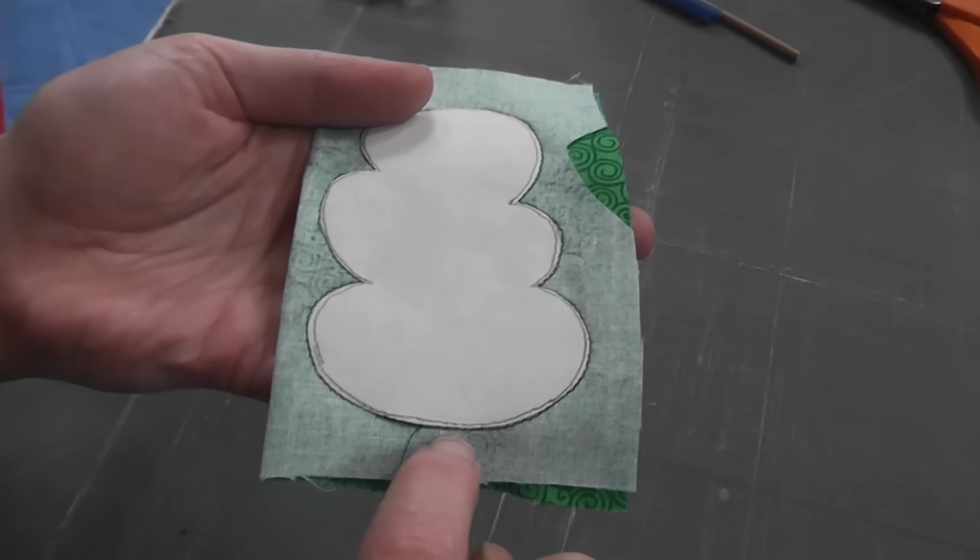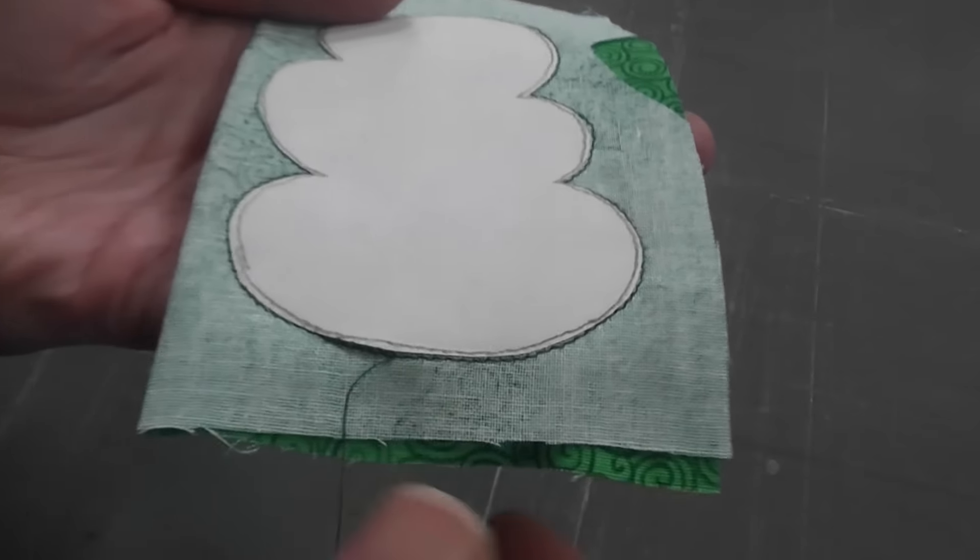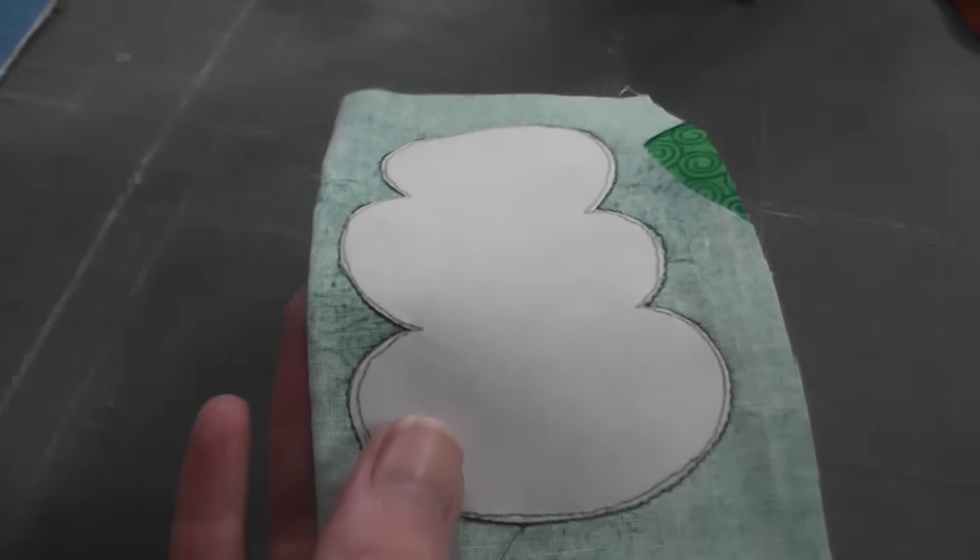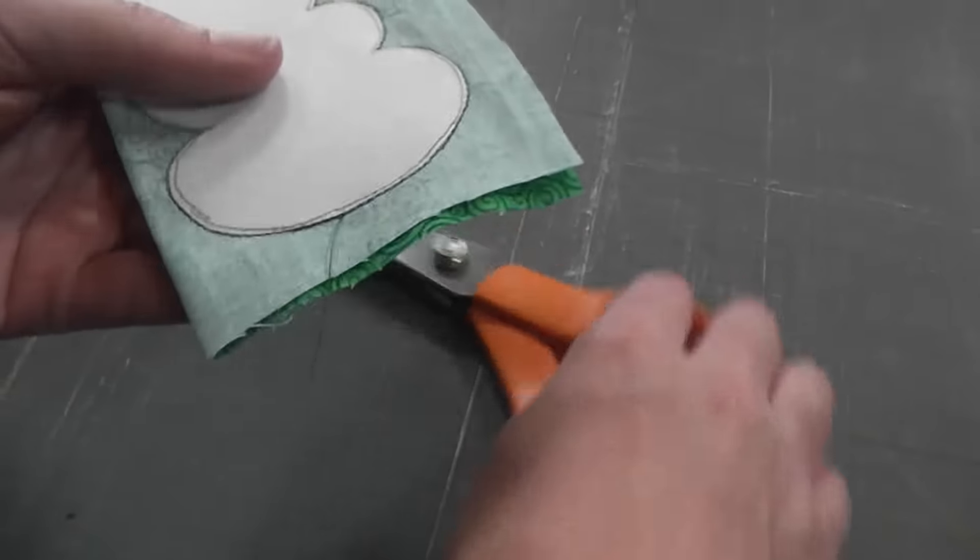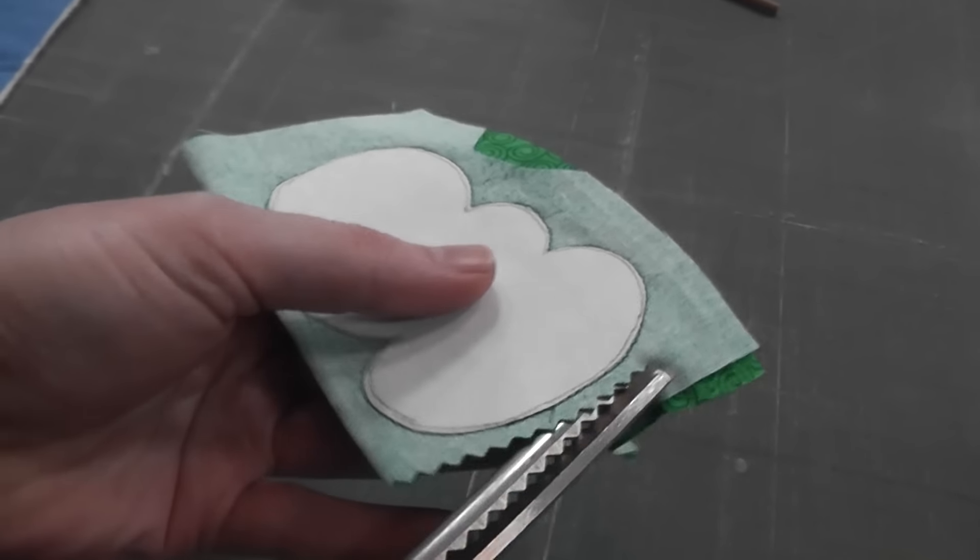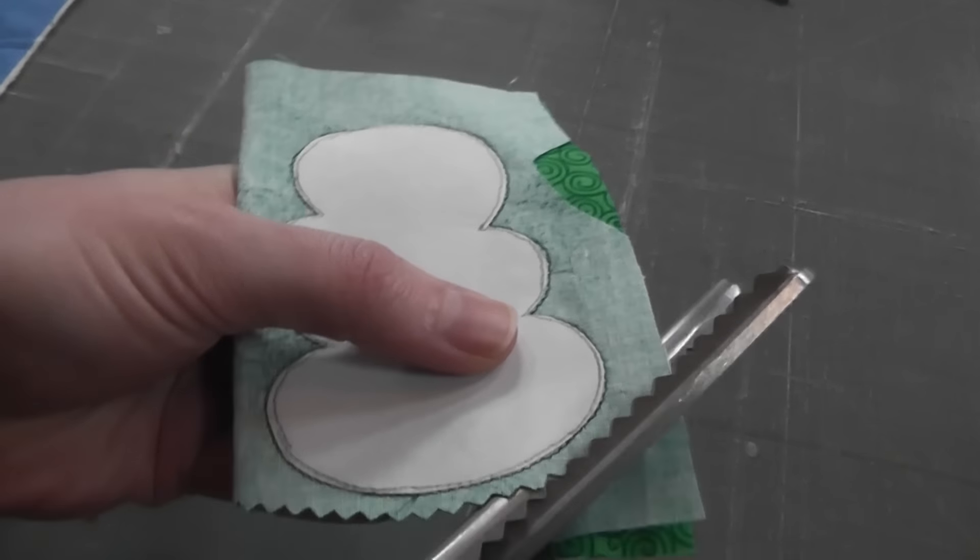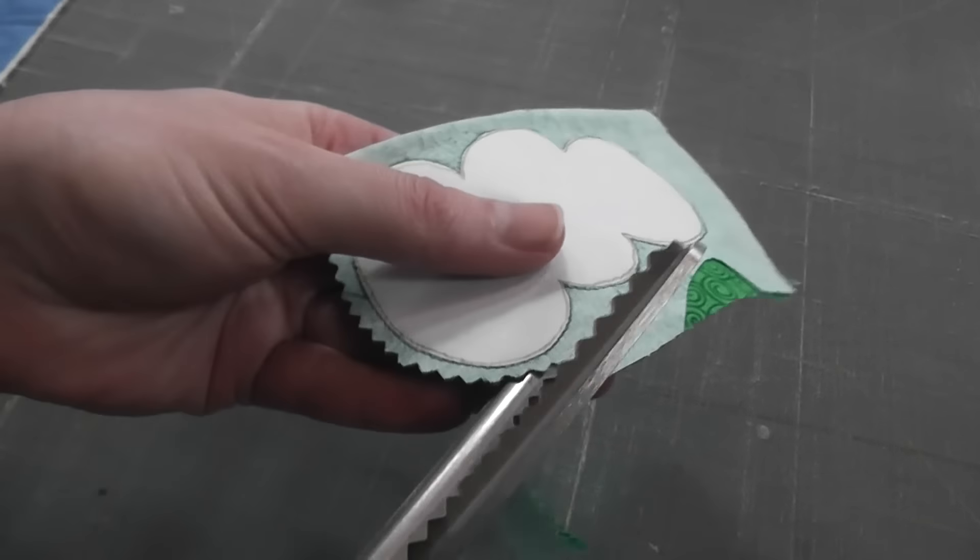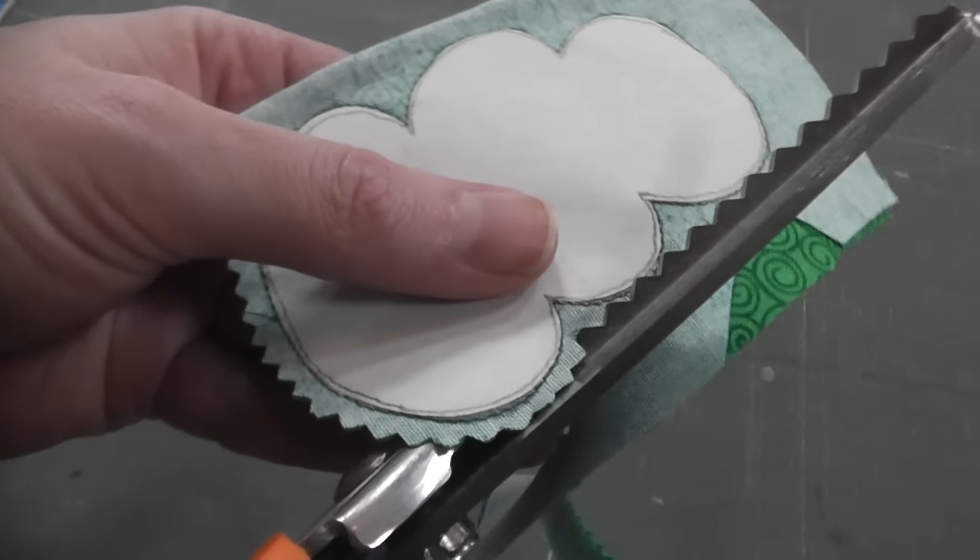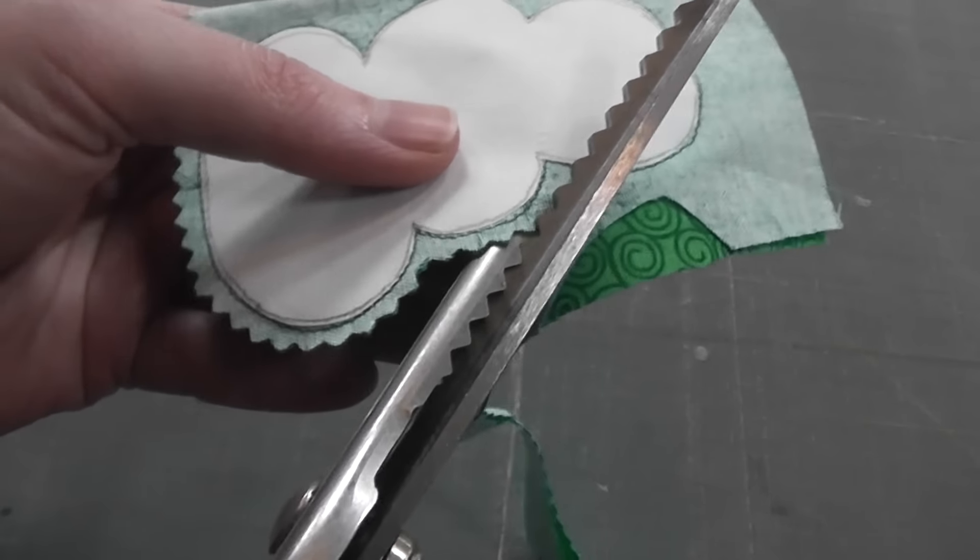So when I got to the end, I actually just overlapped by about a quarter of an inch the starting stitching so that I didn't have to tie a knot or anything like that. That overlapping stitching will be fine. So now what I'm going to do is trim away the excess fabric.